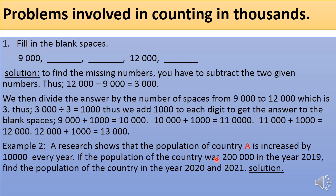Now look at the example. We have 9,000, then two blank spaces, then 12,000. Can you tell if we are counting in ascending or descending order? We have 9,000 and the next given number is 12,000, so the number is increasing. We are counting in ascending order. Now, what number are they adding continuously to fill those empty spaces?